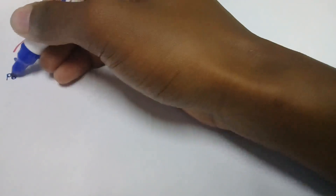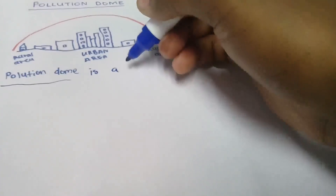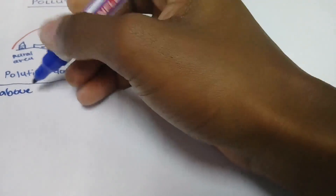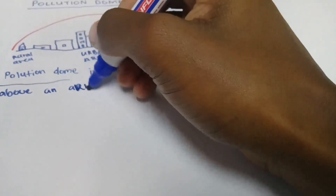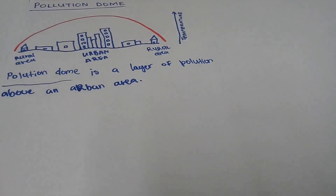Pollution dome is a layer of pollution above an urban area. As you know, the urban area is the one that contributes a lot in terms of pollution — from cars, from factories, and so on. It's like we're repeating things discussed in Urban Heat Island, but now it's about the pollution specifically.